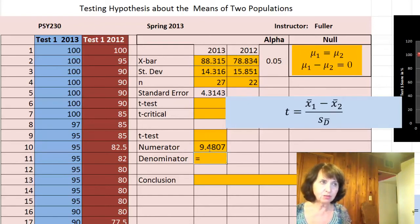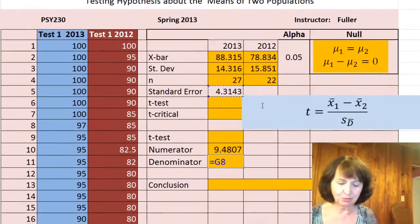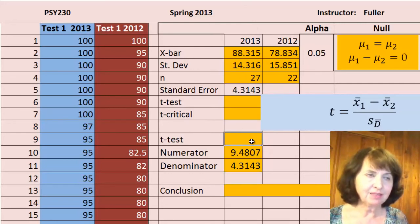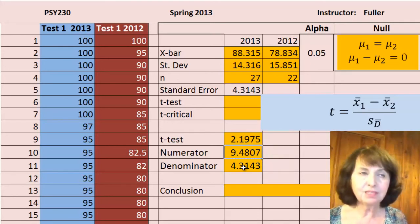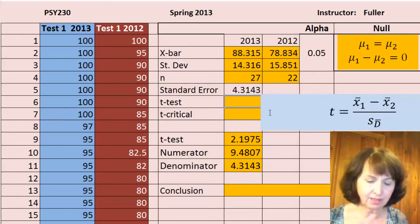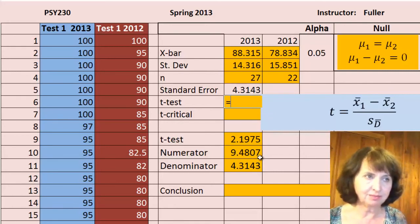And next I have the standard error which was calculated, the long formula, in the cell G8. The difference of these, the ratio of these two, the numerator divided by the denominator, will give me the t-test, which is actually this formula. And I will record the t-test in this place.